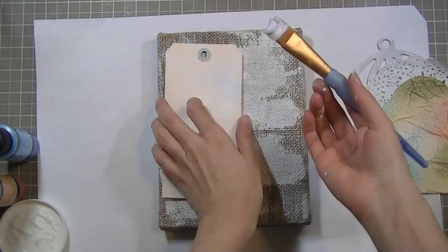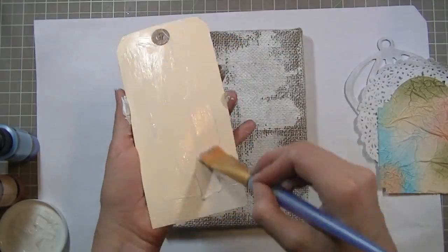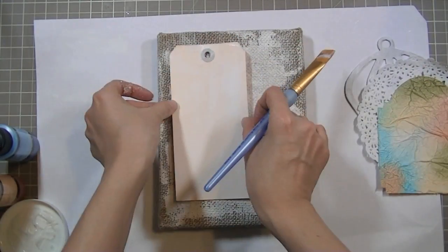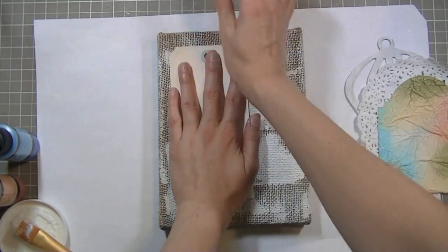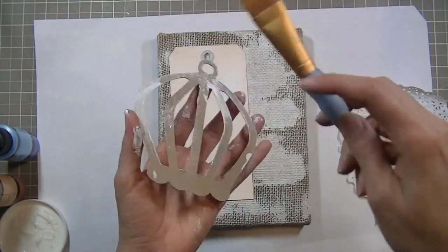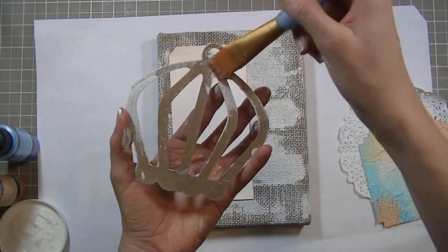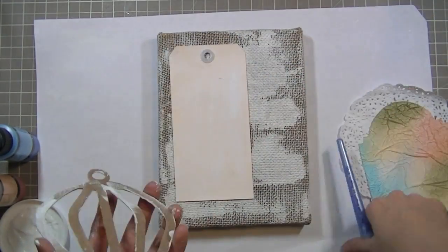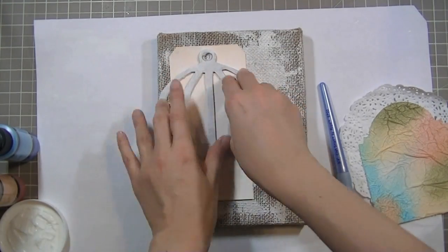I'm going to use some soft gel medium generously on all these pieces just to adhere them to the burlap panel. And I'm just going to push that down. Make sure it's all nicely set on there. And what you're going to be seeing is that I'm going to be doing that to all the pieces but I'm also going to be adding a little bit of hot glue behind some of the pieces just to hold things over as the medium dries.